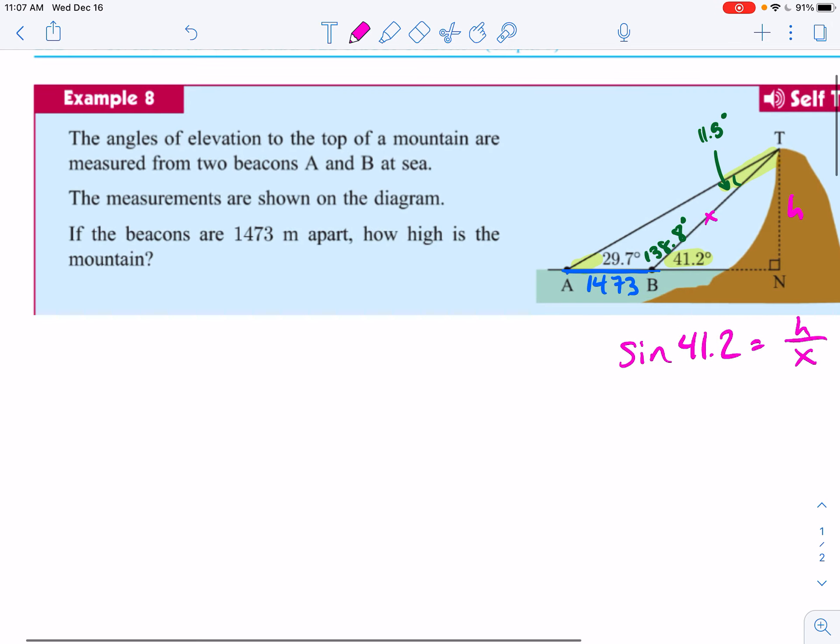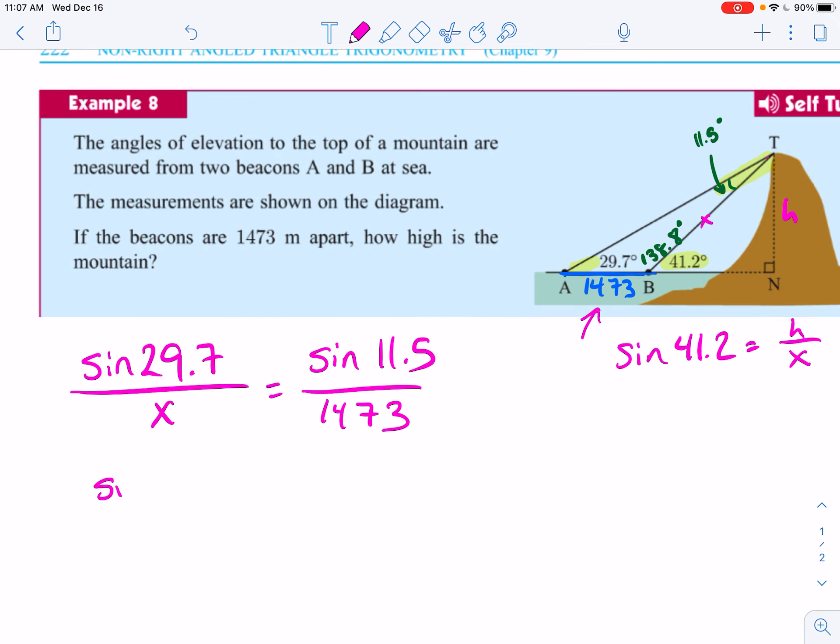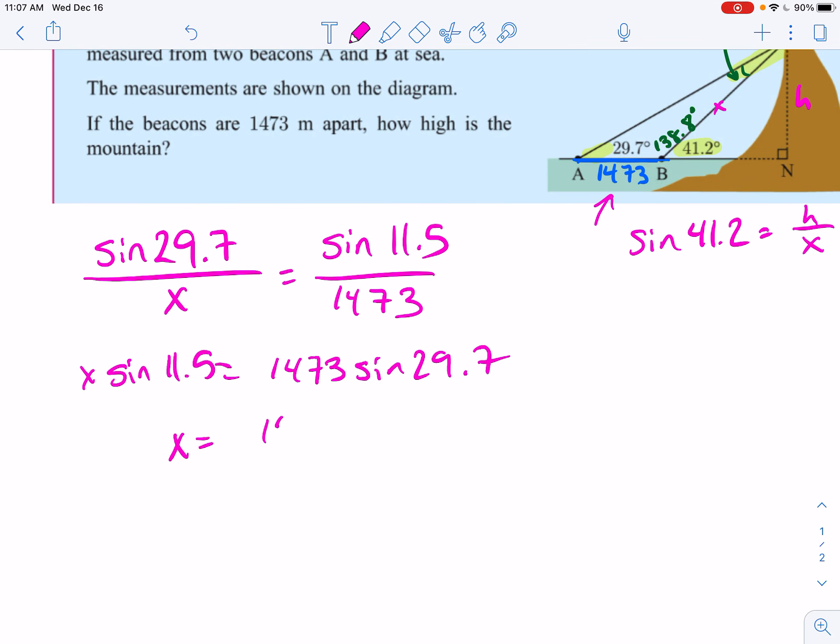So what we can do here is we can say sine of 29.7 over, what's across from 29.7? I'm just looking at this little triangle. And so, opposite the 29.7 is X, is equal to, what do I know? I know this side right here, so the angle across from it is 11.5, so sine of 11.5 over 1473. So, now I have X sine of 11.5 is equal to 1473 sine of 29.7. And then, therefore, the exact value for X is this. This is exact, because I haven't rounded anything, I didn't plug into my calculator.